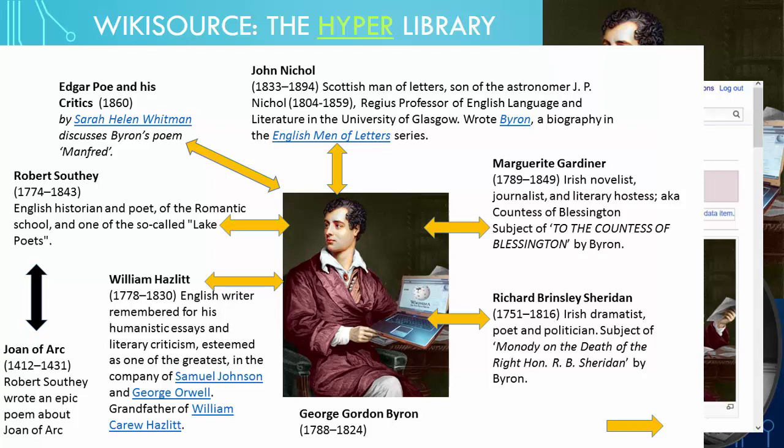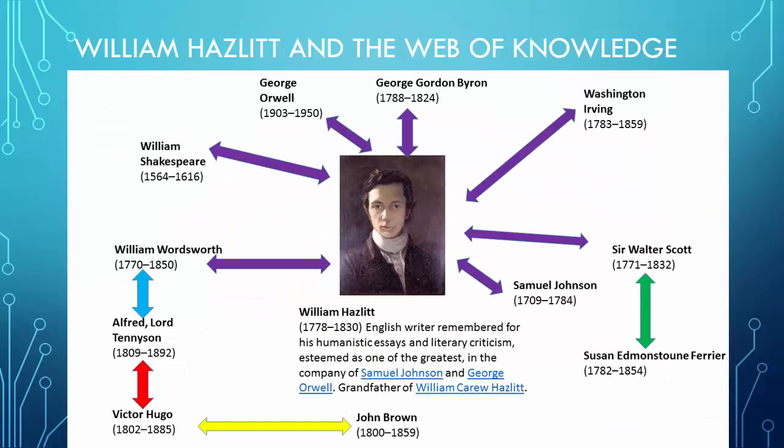Robert Southey in turn links through to Joan of Arc. William Hazlitt himself is quite richly linked on Wikisource — he links to George Orwell, Byron, Washington Irving, Sir Walter Scott, Samuel Johnson, William Shakespeare, William Wordsworth, and more. So you can click through to their works. Then you can go to William Wordsworth, who links on to Alfred Lord Tennyson, who in turn links to Victor Hugo, who in turn links on to John Brown.